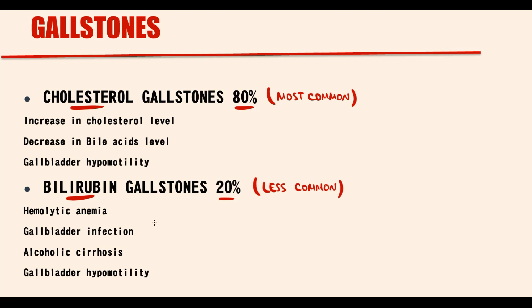Also, we have to know that the most common disease that leads to bilirubin stone formation, aside from chronic hemolytic anemia, is alcoholic cirrhosis.